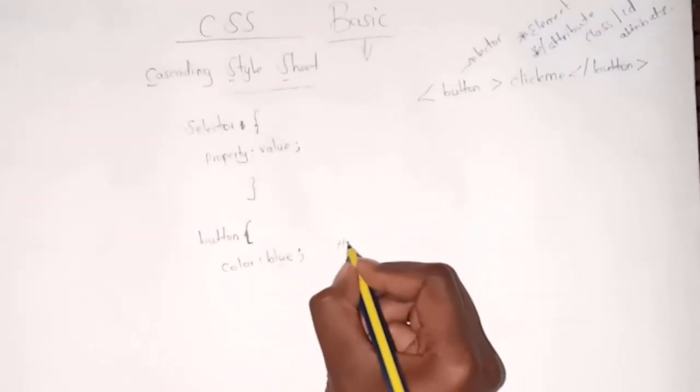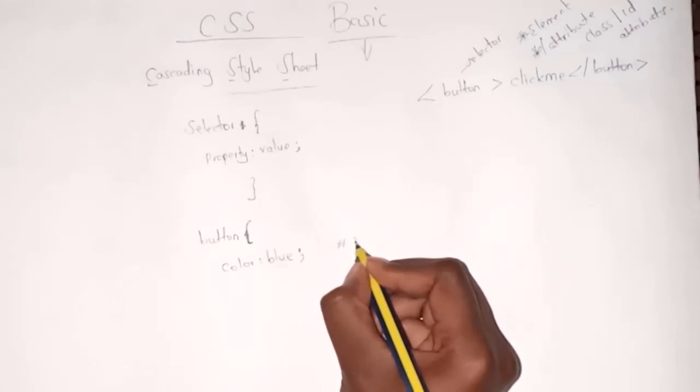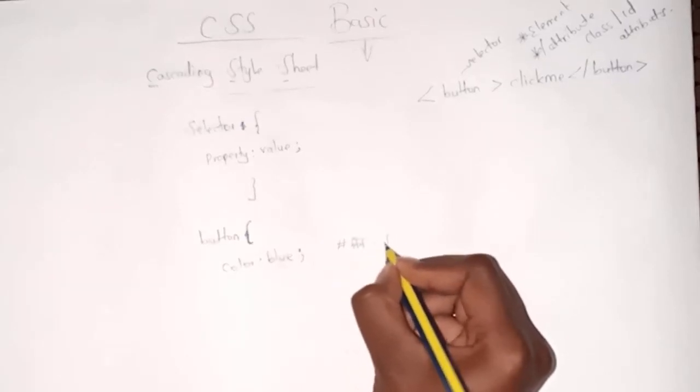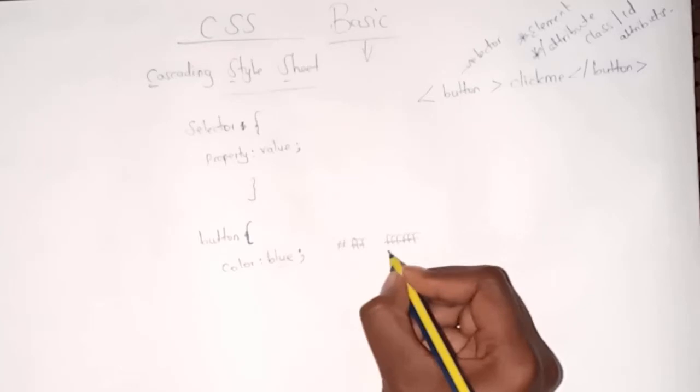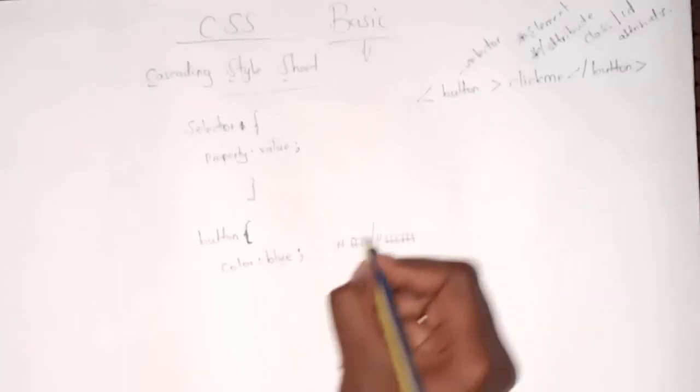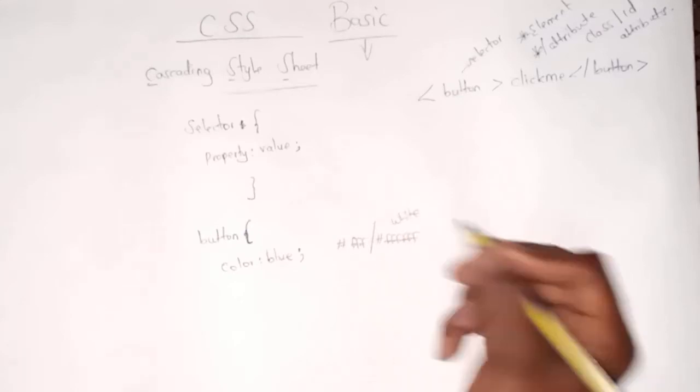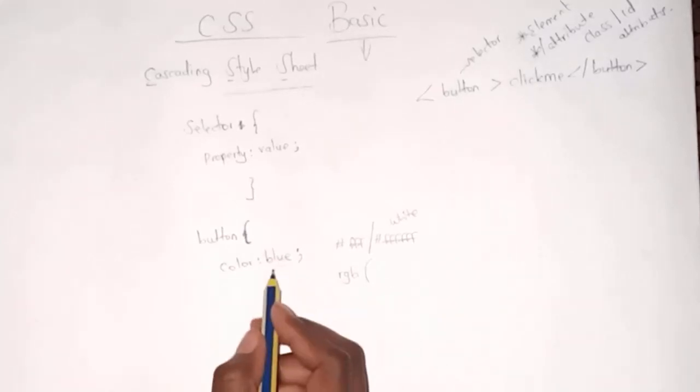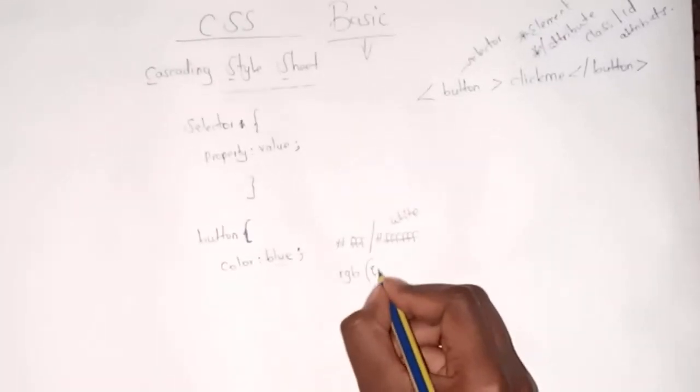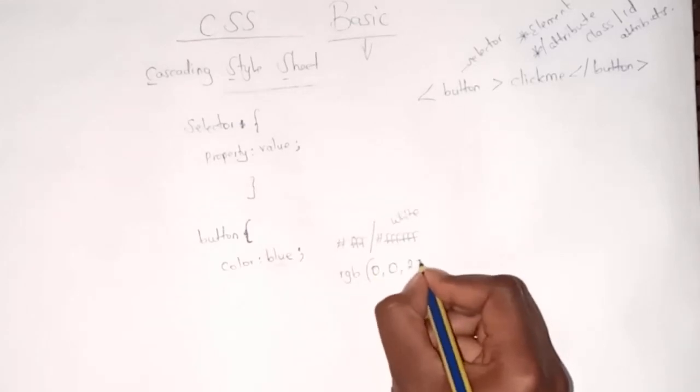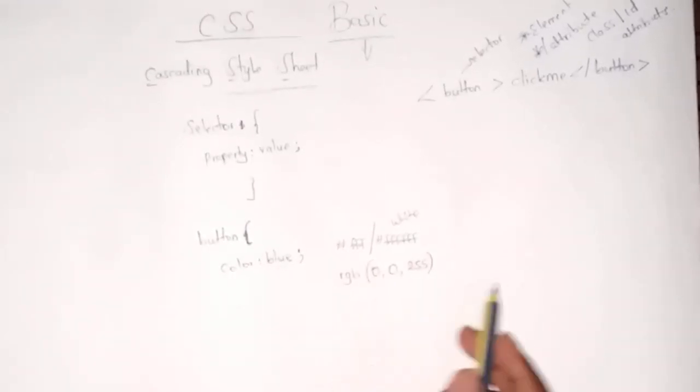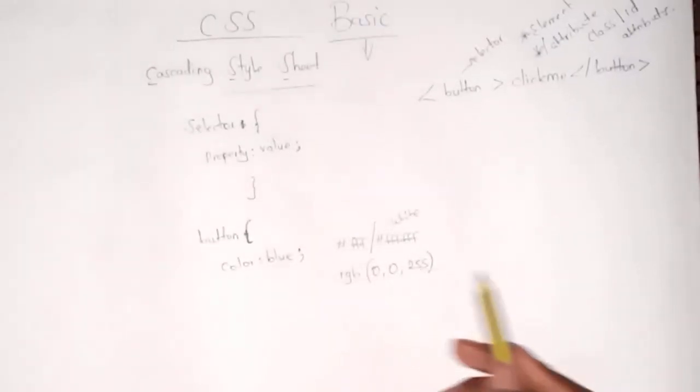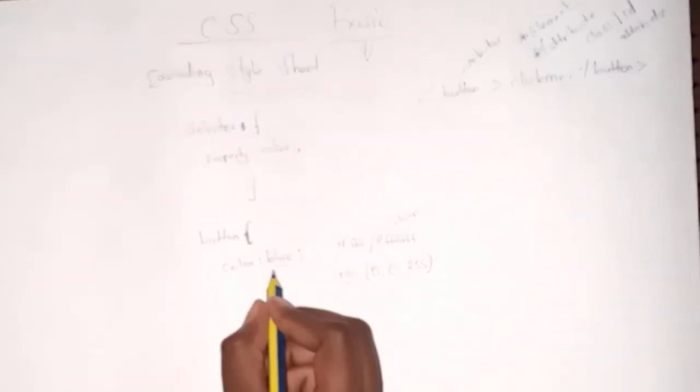You can use blue, or this is called hex, where you say—I don't know for blue, but for white it's FFF or FFFFFF, six or three characters. This is white. You can also use RGB—red, green, blue. For blue, because blue is 255, this will be zero, zero, and 255. If it's 255, zero, zero then it's red.